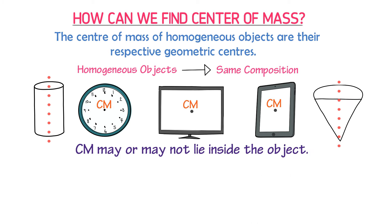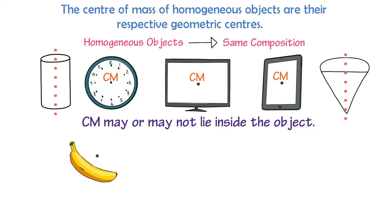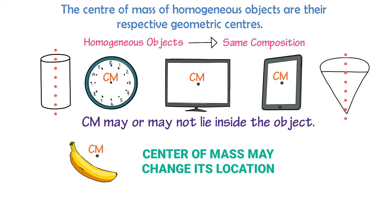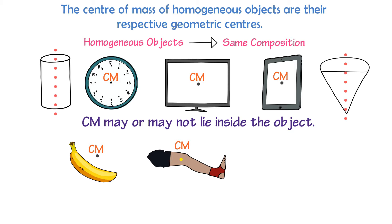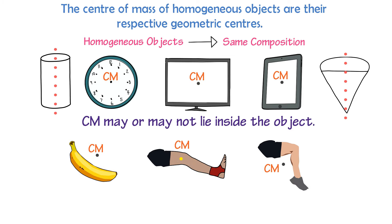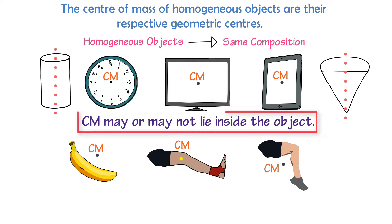Also remember that the center of mass may or may not lie inside the object. For example, the center of mass of a banana is outside, at this position. The center of mass may also change its location depending upon the orientation of the object. For example, when you stretch your leg, the center of mass is at this point, while when you bend your leg, the center of mass is outside the body at this point. Therefore, note that center of mass may or may not lie inside the object.